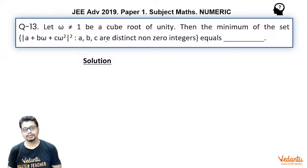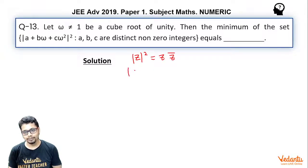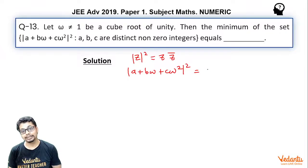Here a, b, c are supposed to be distinct non-zero integers. So as we explore this expression, since we can always say that |z|² = z·z̄, I can say |a + bω + cω²|² is essentially z·z̄.